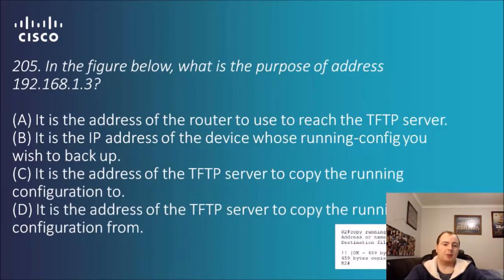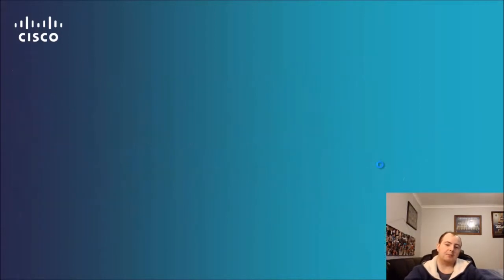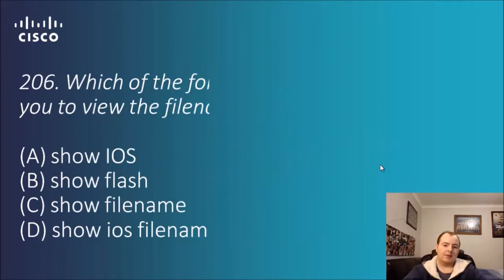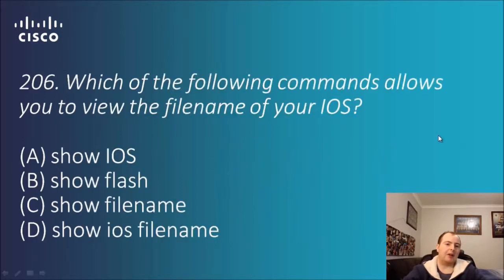Question 205: in the figure below, what is the purpose of address 192.168.1.3? The command shown is 'copy running-config TFTP'. The prompt 'address or name of remote host' is a big giveaway, followed by that address. Looking through the answers, it is the address of the TFTP server to copy the running configuration to. The answer is C.